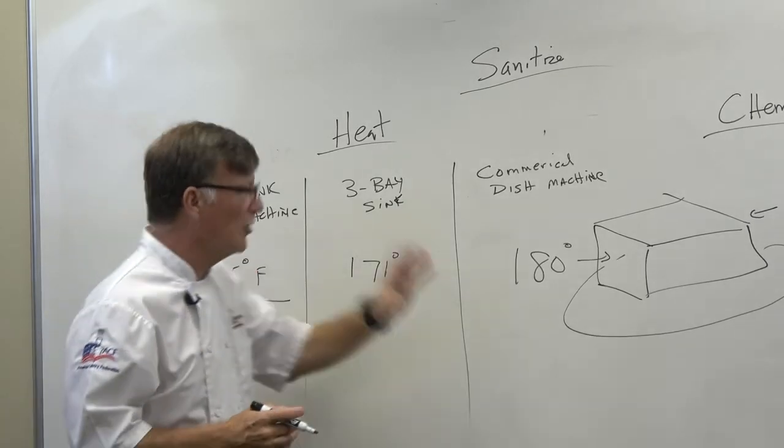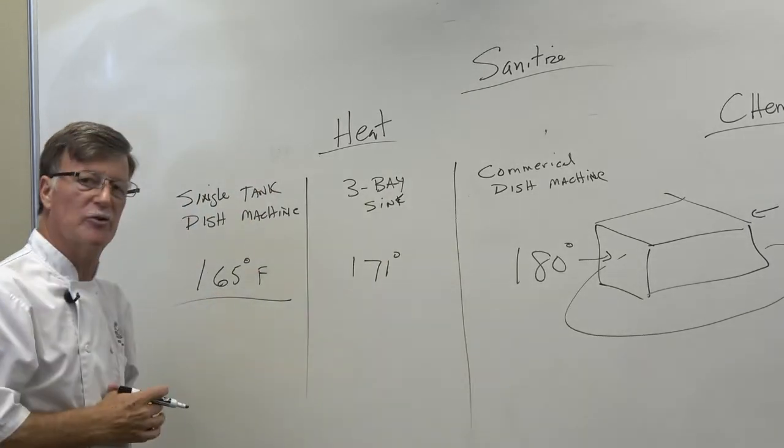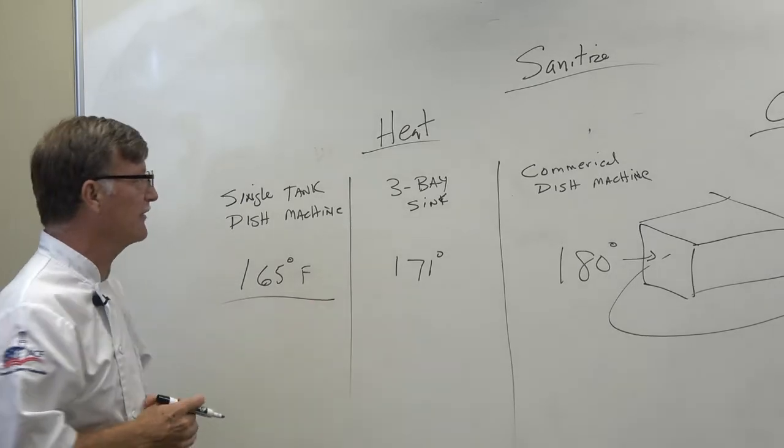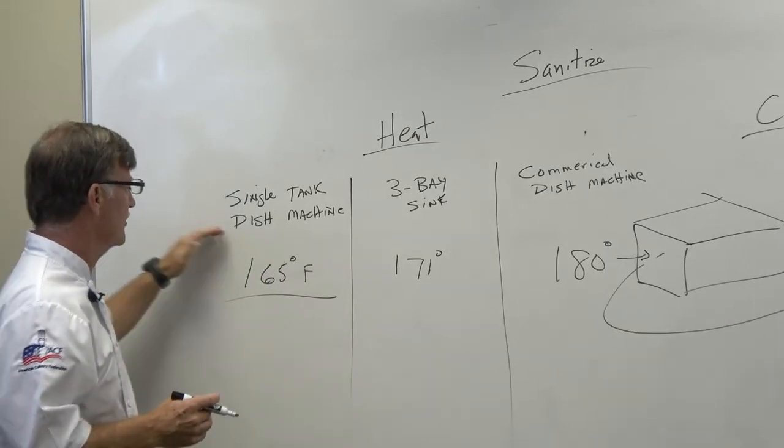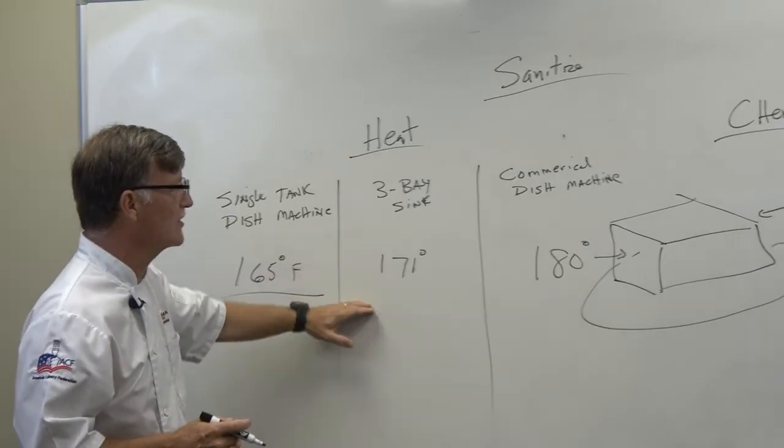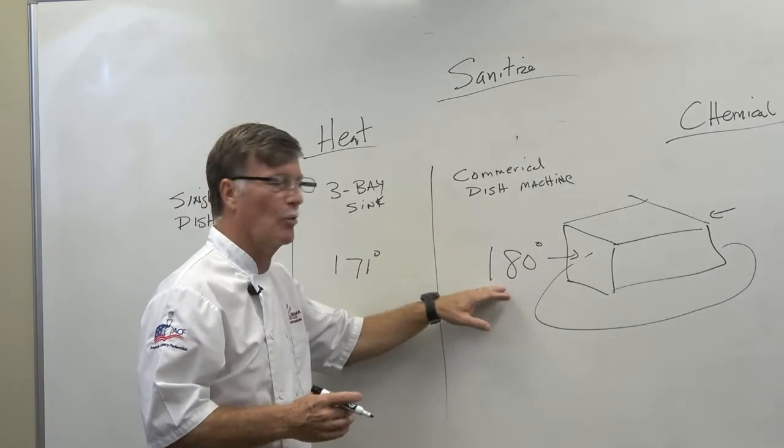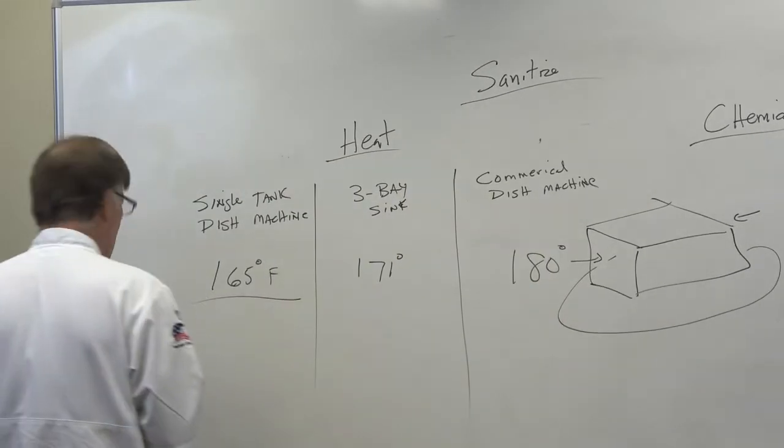That's the main difference. And that's what in the book is very confusing. A lot of students say, why do I need three different temperatures? So just remember: single tank 165, three bay 171, commercial machines or dish machines 180.